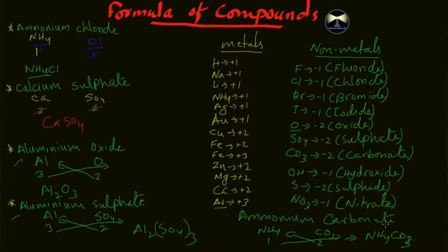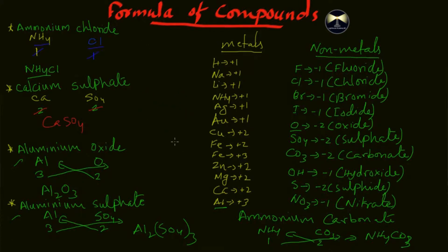So basically, once you know the oxidation states you can form the formula of any compound. For example, water: hydrogen has an oxidation state of one and oxygen has an oxidation state of two. Cross multiply them and you get H2O — this is why water has the formula H2O.